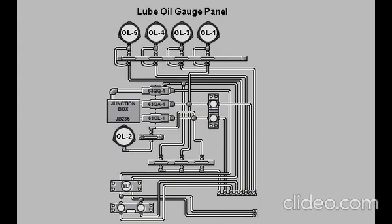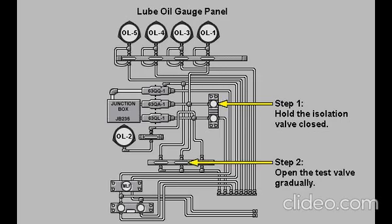To perform the low lube oil pressure auxiliary pump start test, the isolation valve should be held closed and the test valve should be opened gradually to lower the lube oil pressure in the piping to pressure switch 63QA-1. When the lube oil pressure falls to the setting of pressure switch 63QA-1, the auxiliary lube oil pump should start.